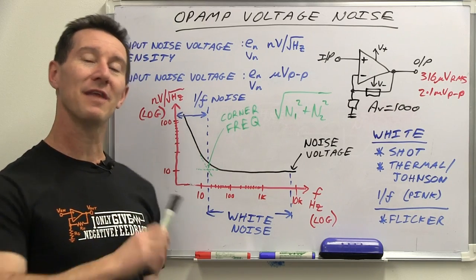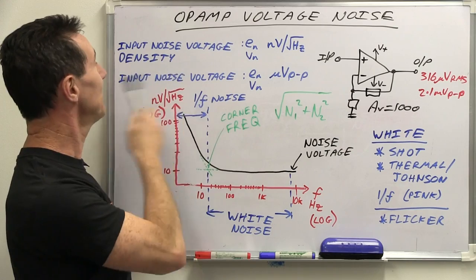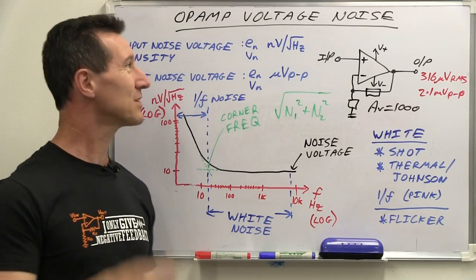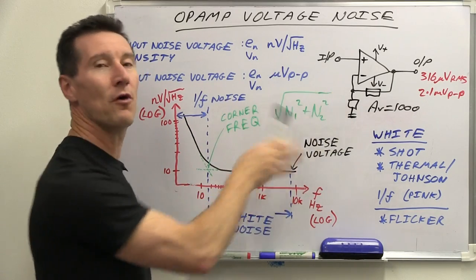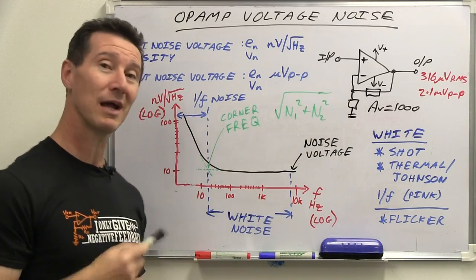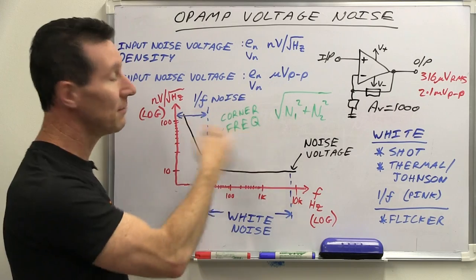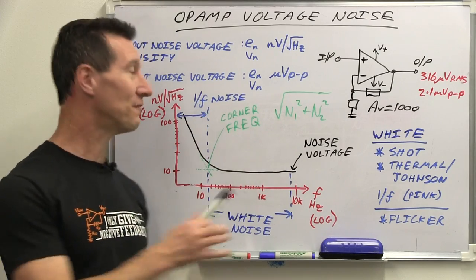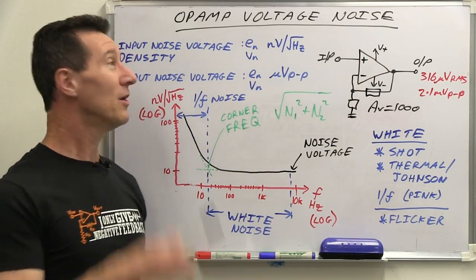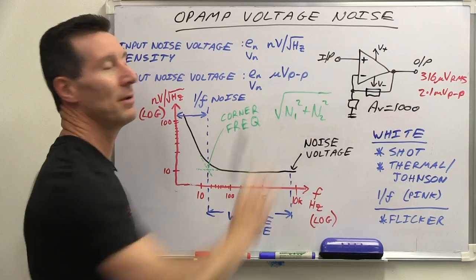You'll also notice on the data sheet that there's an identical noise spec for current as well — input noise current density and input noise current. We won't go into that; that's the current into the input of the op-amp. At the moment we're only looking at the voltage scenario. But if you've got significant input currents, you have to take the input current noise into account as well in those really critical low-noise circuits. The same sort of fundamental theory applies, and yes, it's all going to add up with the voltage noise as well.